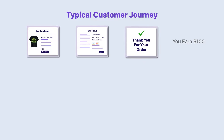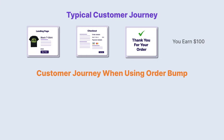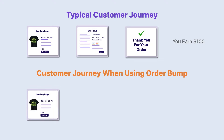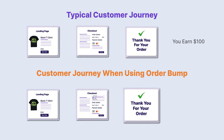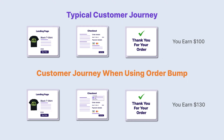With an order bump, rather than settling for $100, here's what you do: a person comes to the landing page, accepts the product offer, goes to the checkout page to pay $100, but then sees an order bump offer worth $30. He can accept it with one click, adds it to the order, and proceeds to pay — so now you have a total order value of $130. You just made an extra $30 without any extra effort.